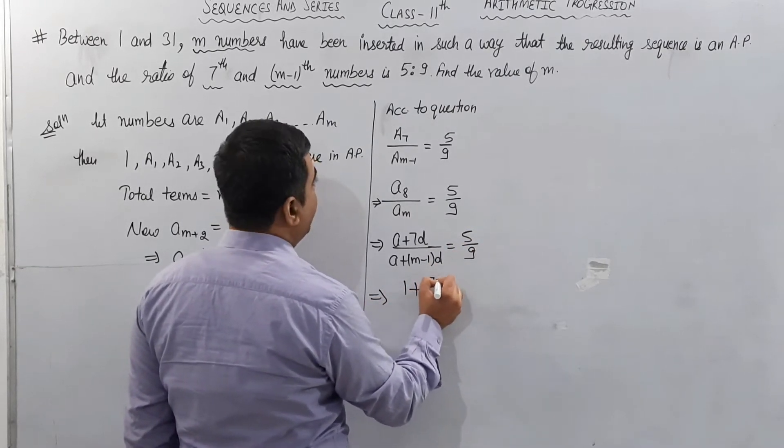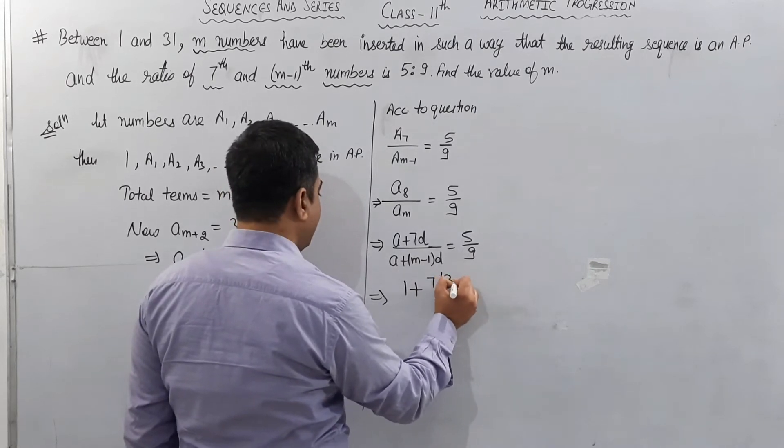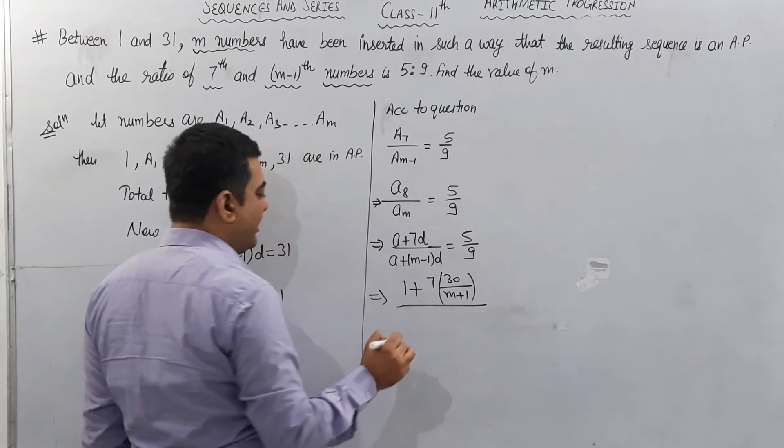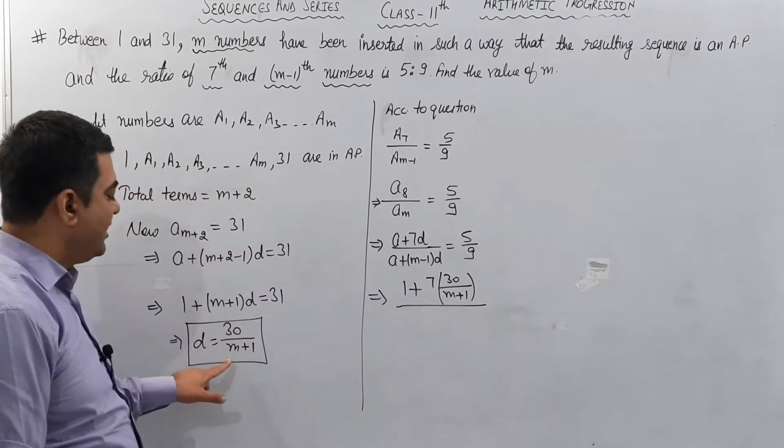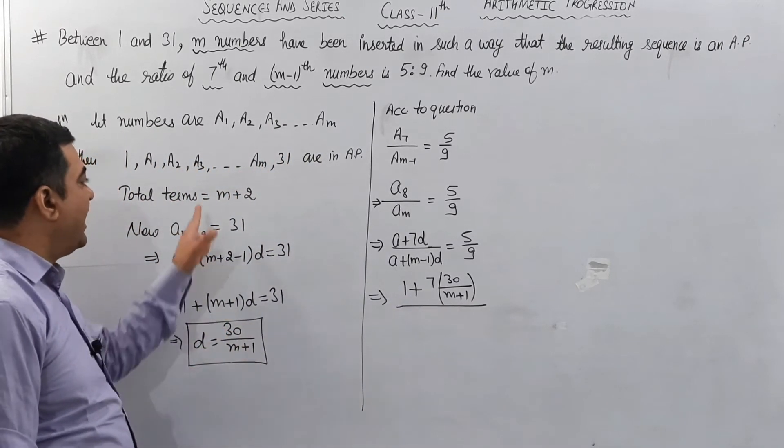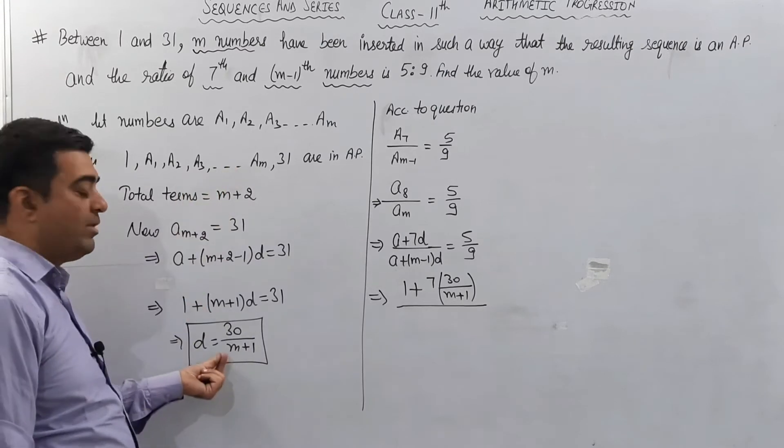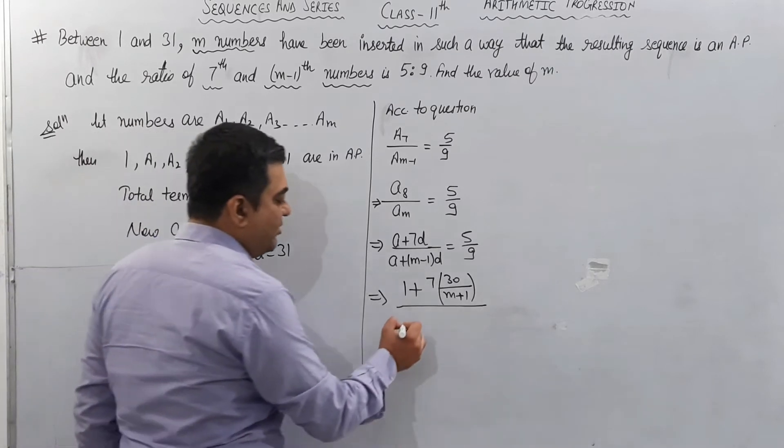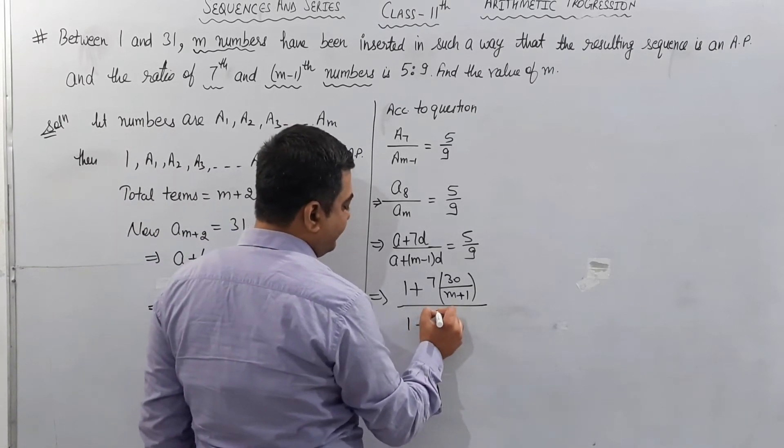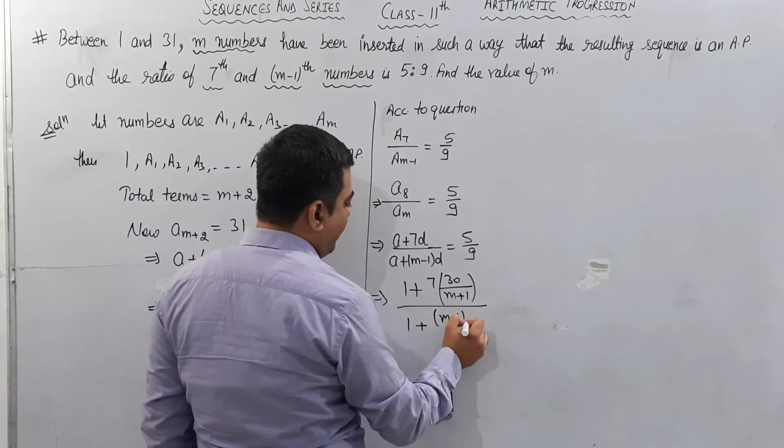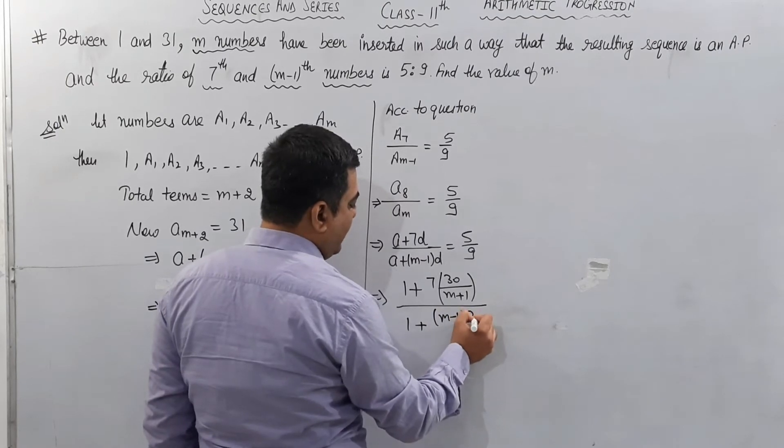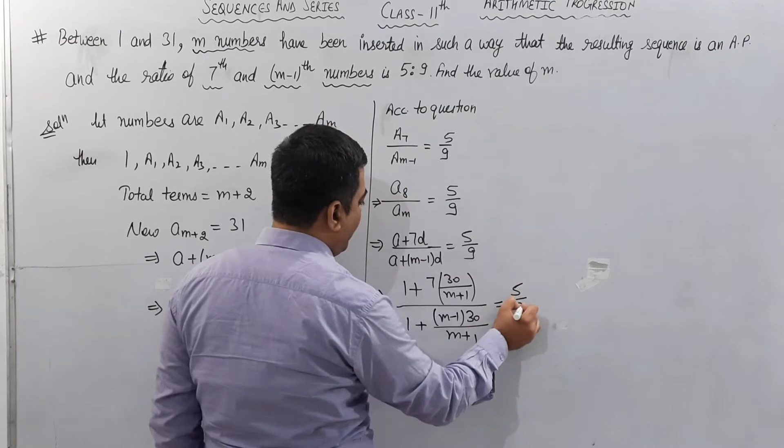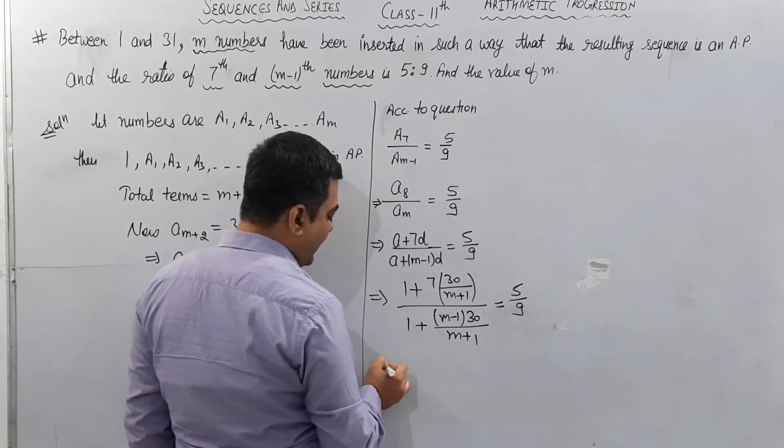Now I will fill the value of a and d. Value of a is 1, 7d value is 30 upon (m+1). We can find d as (b-a) upon (n+1), where n is the number of terms inserted, so m plus 1. a value is 1 plus (m-1) times 30 upon (m+1) equals 5 upon 9.